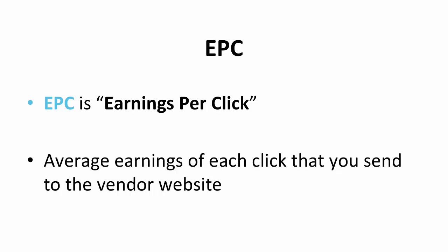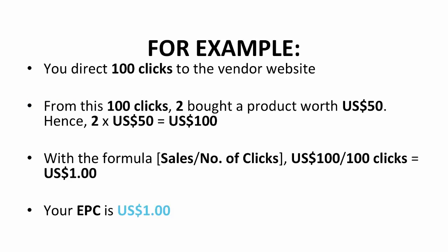In the previous slide, I mentioned EPC. Now I will elaborate and explain about it, and will introduce the formula to calculate it too. EPC stands for Earnings Per Click. It's the average earnings of each click that you send to the vendor website. It involves your conversion rate. How do you calculate your EPC? The formula of EPC is sales divided by the number of clicks.